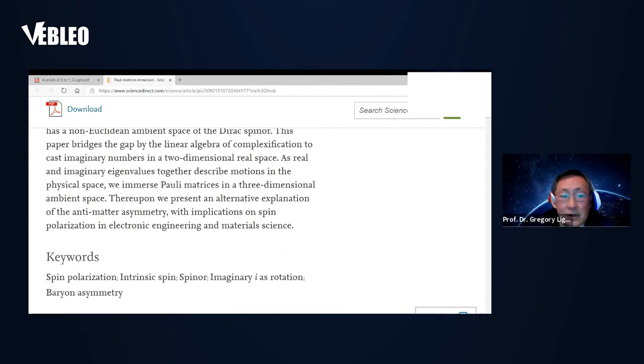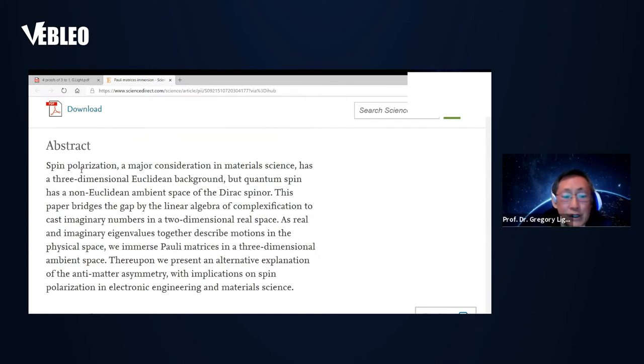Spin polarization is a major consideration in material science; it has day-to-day Euclidean background. But Dirac's spinor is not, because we have 720 degree for full turn for any spin half particles. So we want to bridge the gap by the linear algebra of complexification to cast imaginary number i in real two-dimensional space. It is so common that we compute eigenvalues real and imaginary. Why should we ascribe to the non-Euclidean geometry? So here I am presenting a three-dimensional space-time.